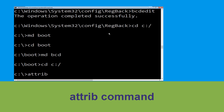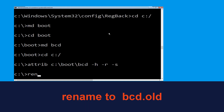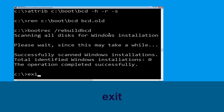Now type attrib C:\boot\bcd -h -r -s and hit Enter to execute. Type ren C:\boot\bcd bcd.old and simply hit Enter to execute this command. Type bootrec /rebuildbcd and hit Enter. Type exit and hit Enter.